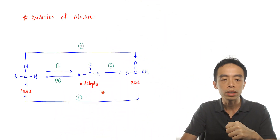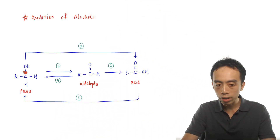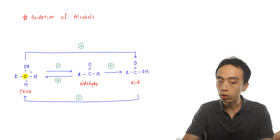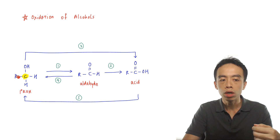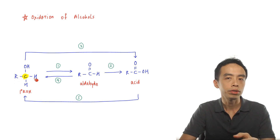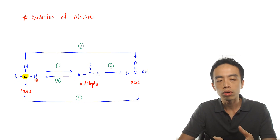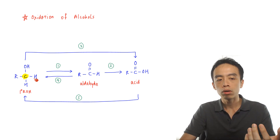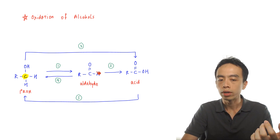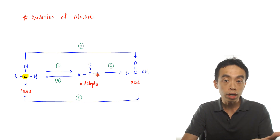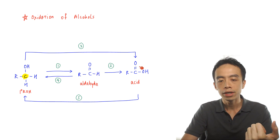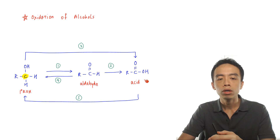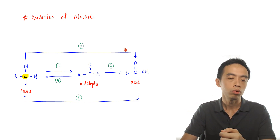The first consideration involves primary alcohol. This alcohol carbon, which we are highlighting in yellow here, is attached to one R group, so this is considered a primary alcohol. In terms of oxidation, primary alcohol can be oxidized to an aldehyde functional group, and aldehyde in turn can be oxidized to a carboxylic acid functional group — so from left to right, this will be oxidation.